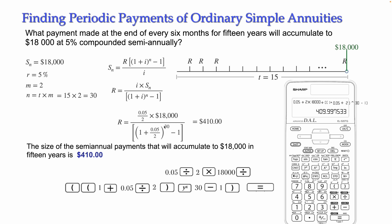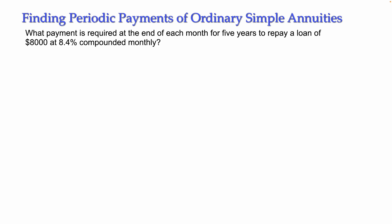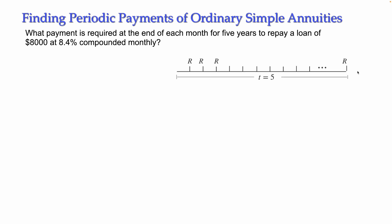Now let's solve a problem related to a present value. What payment is required at the end of each month for five years to repay a loan of $8,000 at 8.4% compounded monthly? In this case, the payments are not for saving or accumulating — they are for repaying a loan. We have a series of monthly payments over five years, and what we know is the $8,000 loan amount at the beginning. So we know the present value.